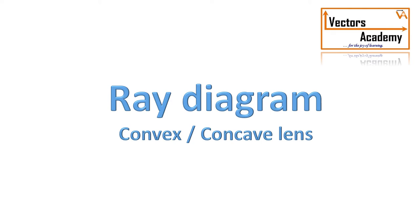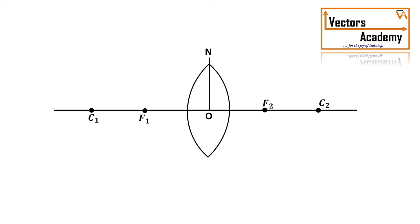Let us now study the ray diagram for the convex and the concave lenses. We have a convex lens with the focus f. The points on the left-hand side are denoted by f1 and c1, and the points on the right-hand side are denoted by f2 and c2. Here f is the focus and c is the center of curvature. The distance oc1 is 2 times the focal length.